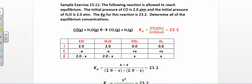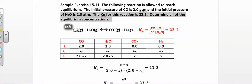Let's try another sample exercise. In this problem they give you two initial pressures and the equilibrium constant, and they're asking for the equilibrium concentrations. There are really only two types of these problems: they give you initial and equilibrium and you solve for K, or they give you initial and K and you solve for equilibrium. In this problem they give us initial and K, and they're asking about the equilibrium.